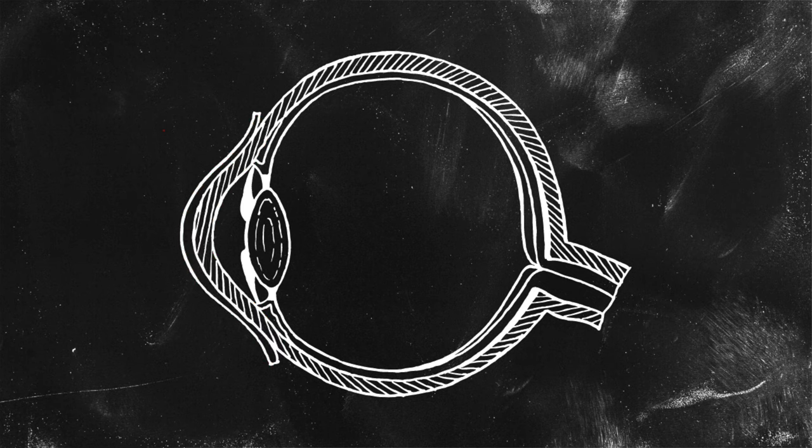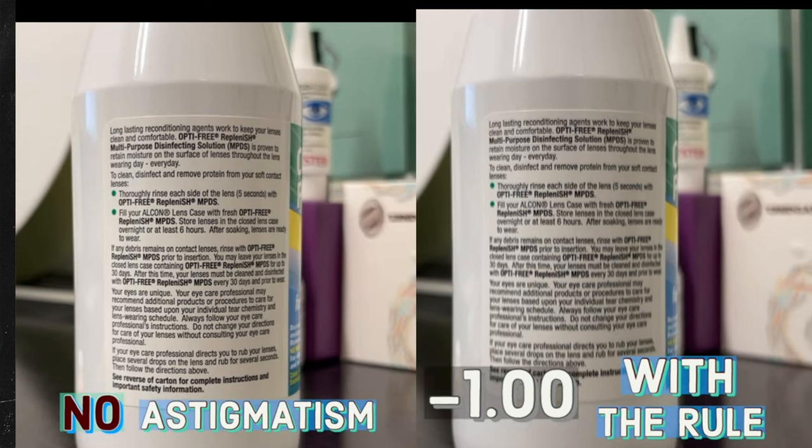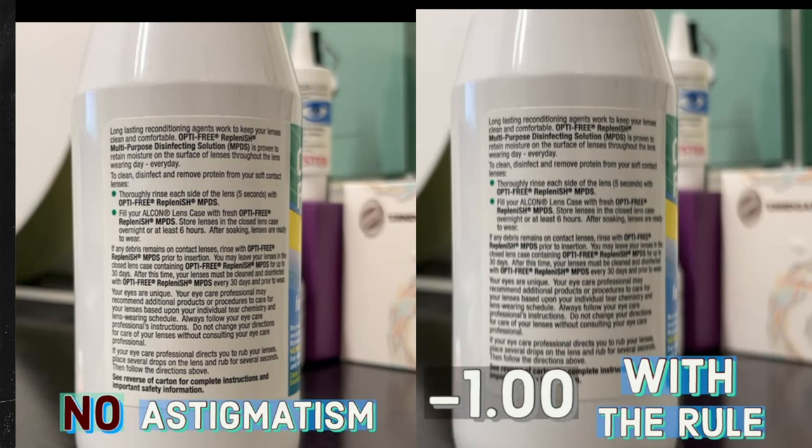In the case of astigmatism, the cornea is not perfectly round and one meridian is steeper than the other, creating a mismatch between the two focal lengths which leads to smudged vision. Astigmatism tends to be permanent. Once you have it, it doesn't get any better. So the approach should be to prevent it from happening in the first place.